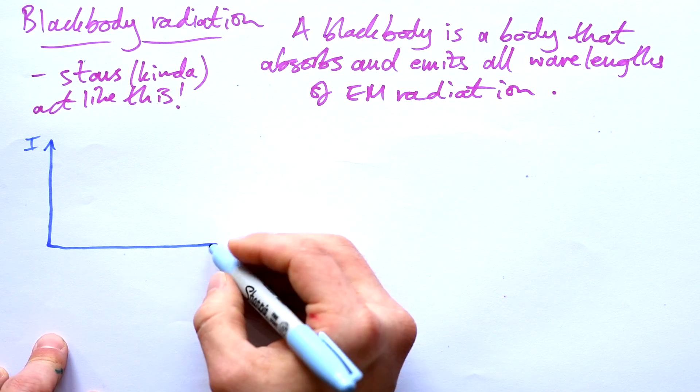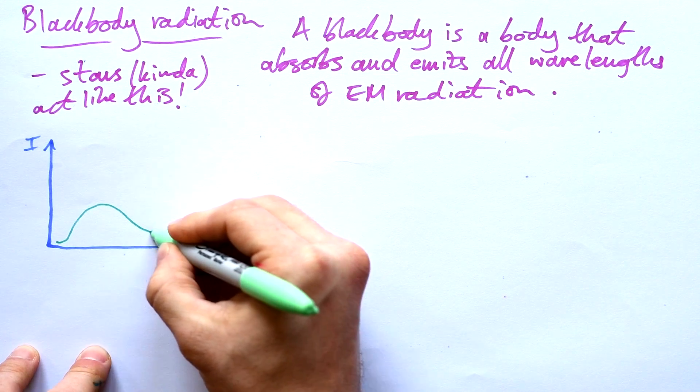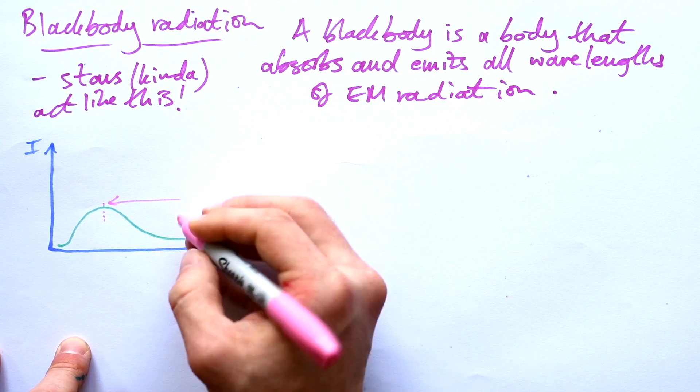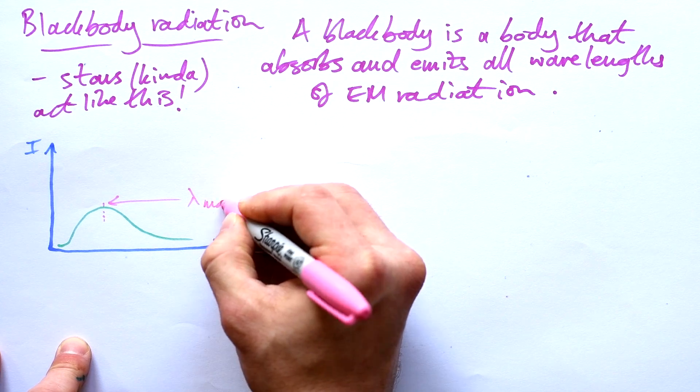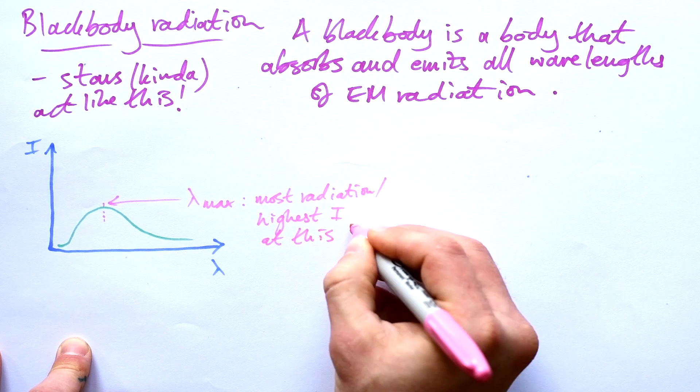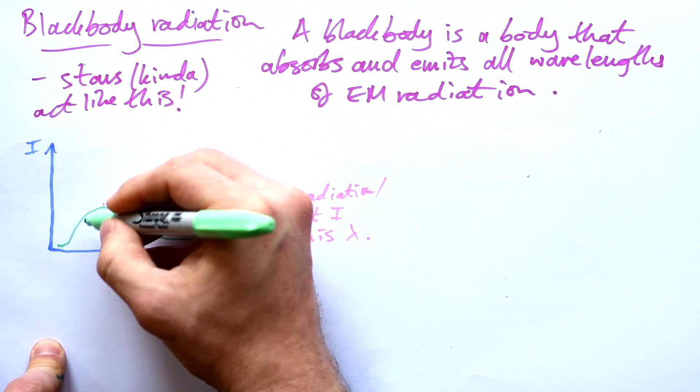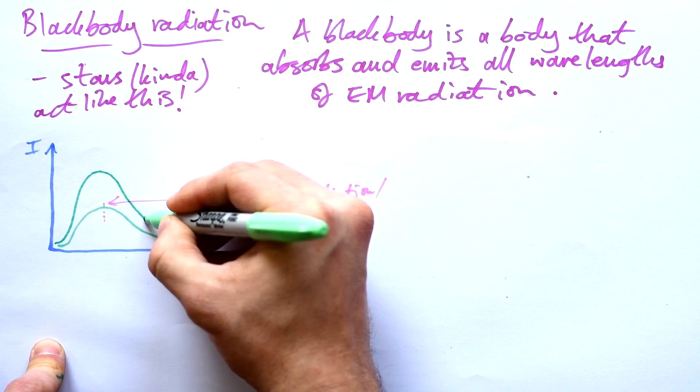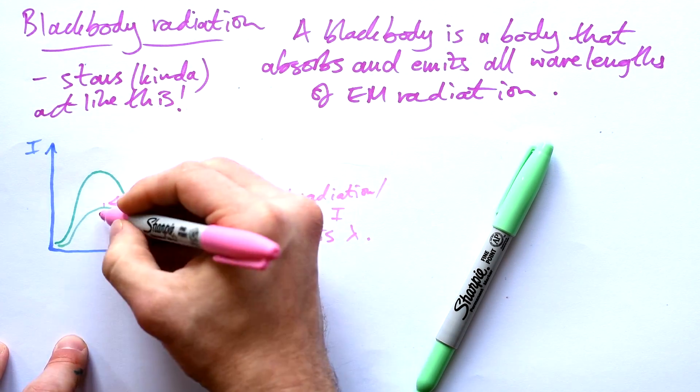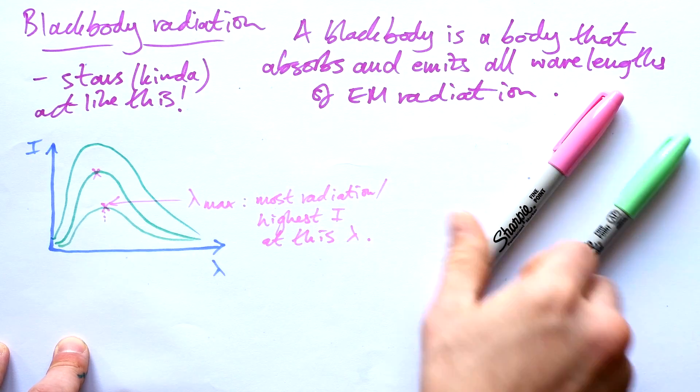So let's draw a graph of intensity against wavelength for a black body. And we have this characteristic curve. And so we have a wavelength at which it emits the most radiation. We're going to call that lambda max, most radiation, or we can say highest intensity at this wavelength. But the thing is, for a black body, we can change what this peak wavelength is. If we increase the temperature, what we have is the intensity goes up, but what's happened to the peak wavelength? Well, it shifted to the left. And if we make it even hotter again, it ends up looking like this.